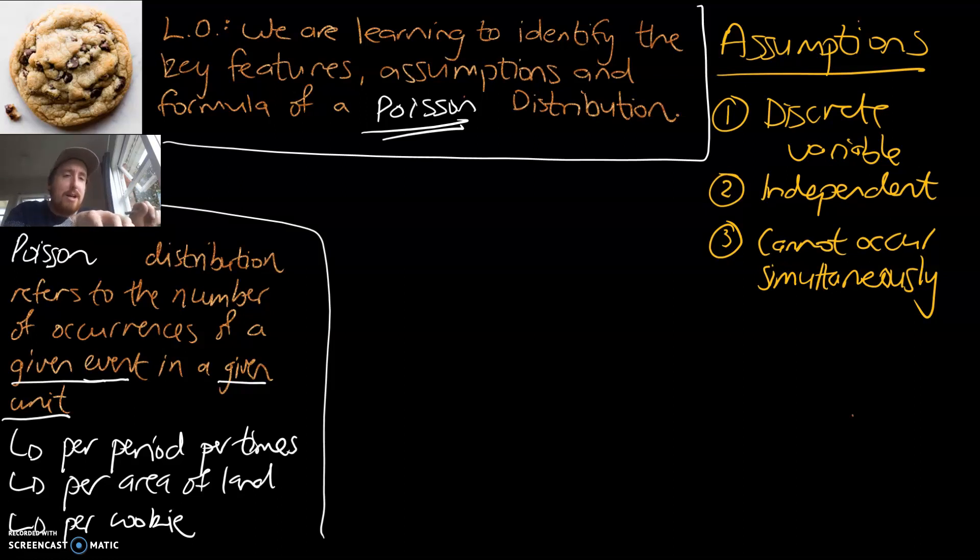And if you look at the dandelions in the grass, the dandelions are never the same thing. There's never two dandelions growing on top of each other. It's the same dandelion or it's a different dandelion. Maybe it's two dandelions right next to each other, but they are not occurring at the same time or they don't grow simultaneously. The fourth one, they must be random or unpredictable.